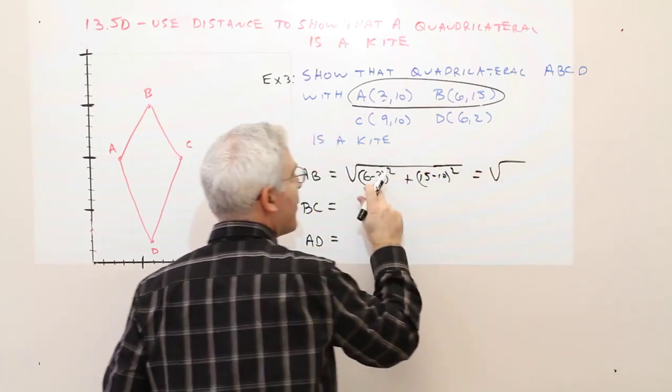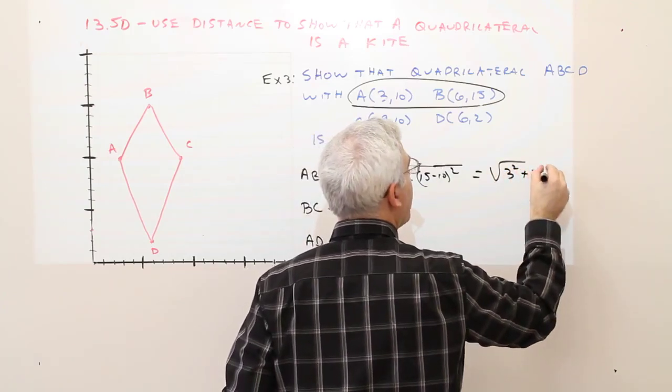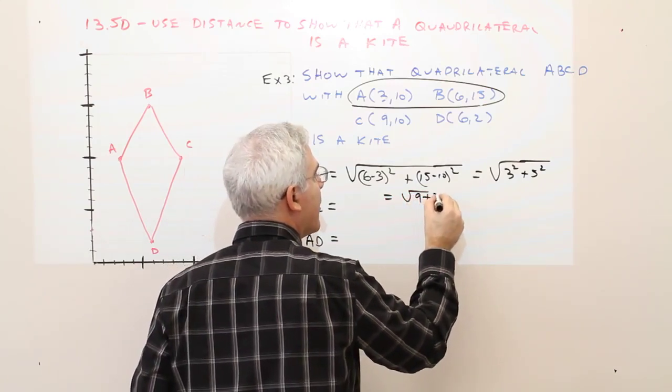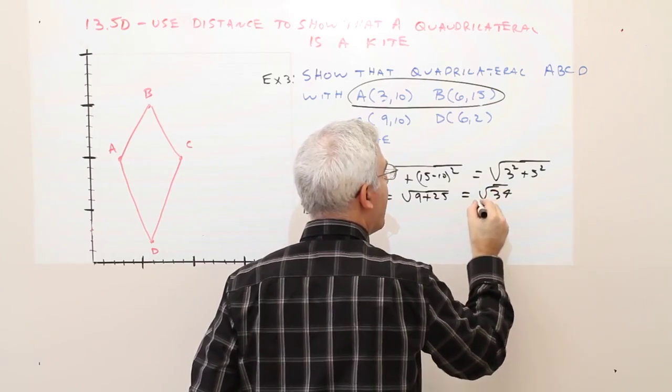Equals the square root of 3 squared plus 5 squared, equals the square root of 9 plus 25, equals the square root of 34.